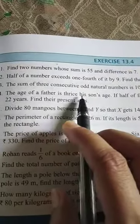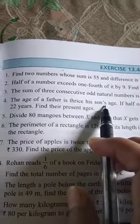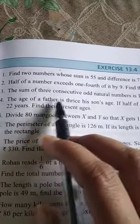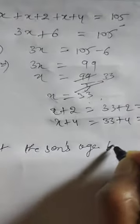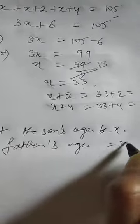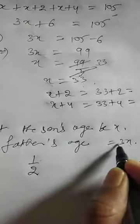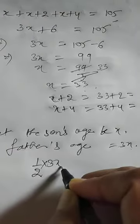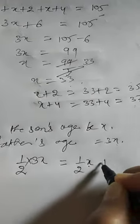Now question number 4: the age of a father is thrice his son's age. We don't know the father's or son's age, but the father's age is 3 times the son's age. Suppose son's age is x, then father's age is 3x because thrice means 3 times. If half of the father's age exceeds half of the son's age by 22 years, find both ages.